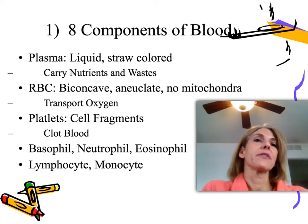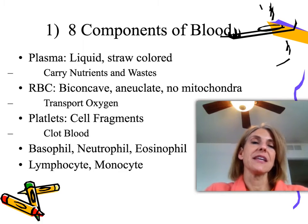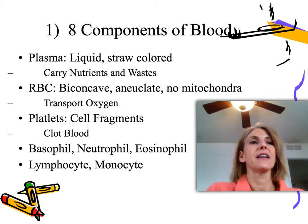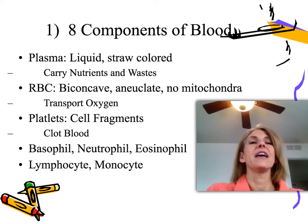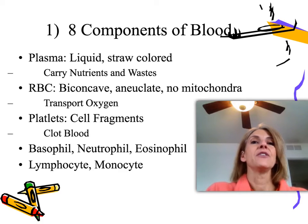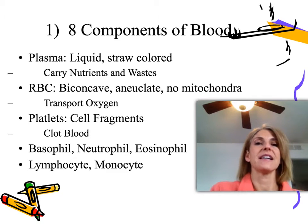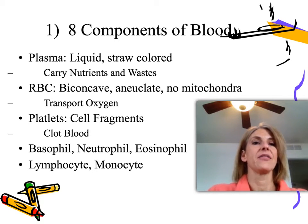Then you have your platelets or thrombocytes — these are not even cells; they're fragments of a cell. A megakaryocyte gets really big and little pieces start to pop off of it, and those are used to start the clotting cascade. Your different white blood cells, the fills and the sites, we're going to talk about those on another slide.